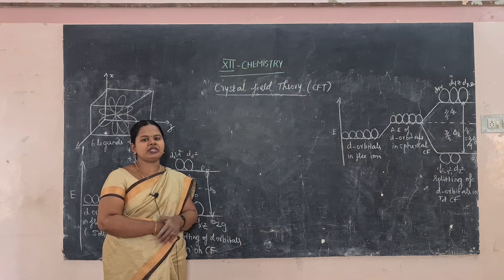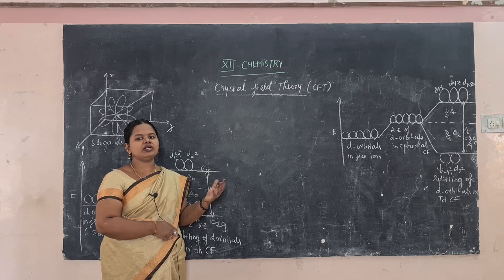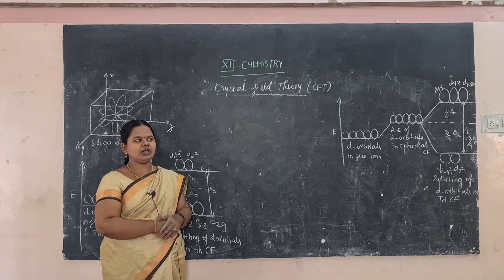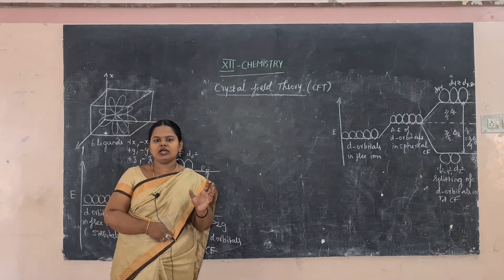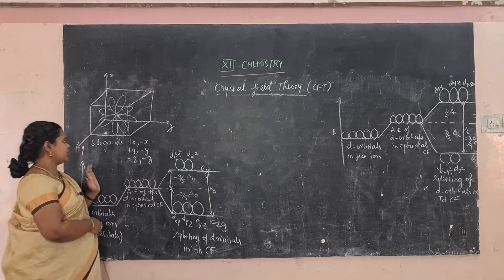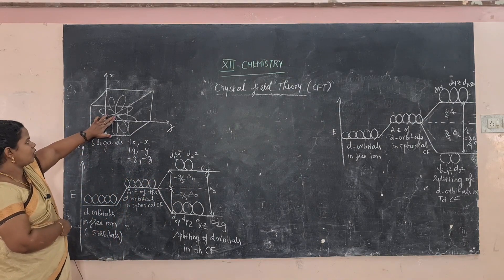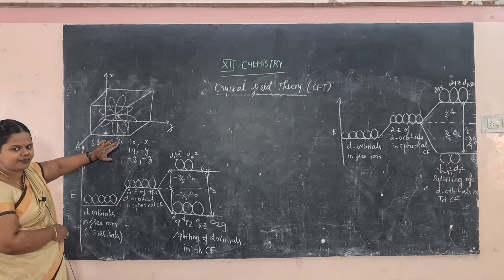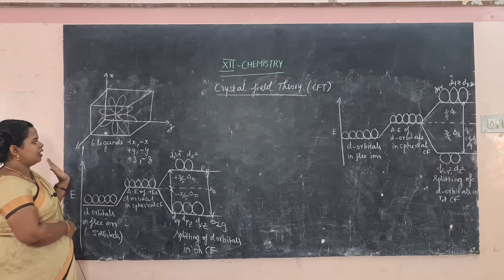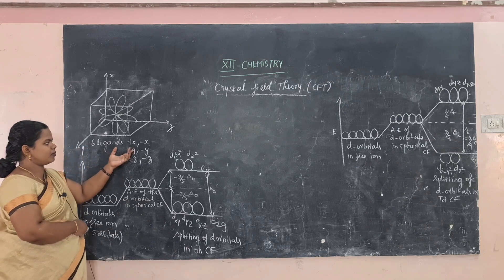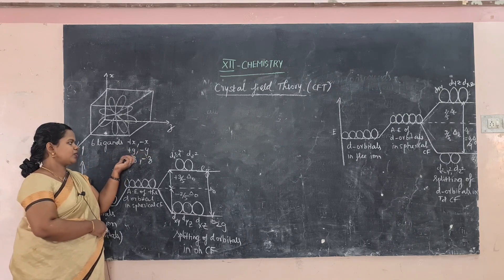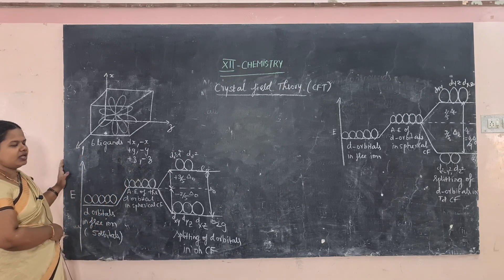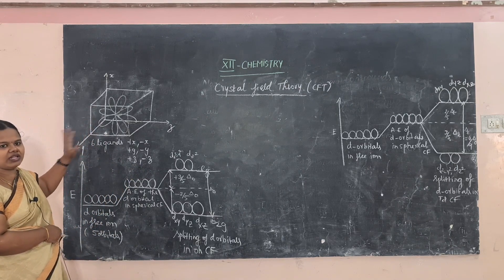The formation of a complex is explained through hypothetical steps. In an octahedral complex, the central metal atom is present at the origin, and the ligands approach from the axes: plus x, minus x, plus y, minus y, plus z, and minus z directions.